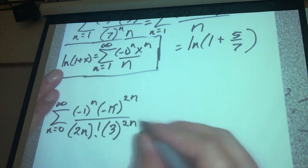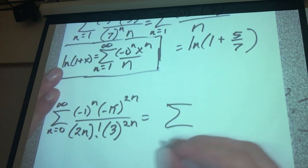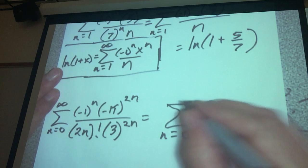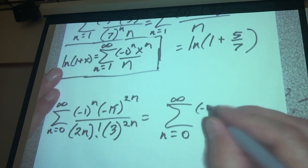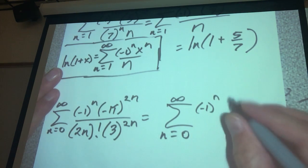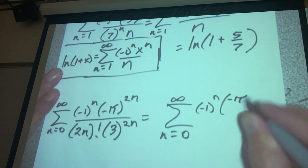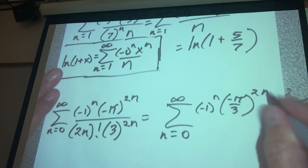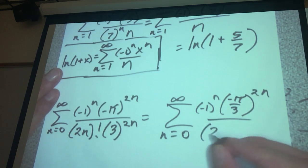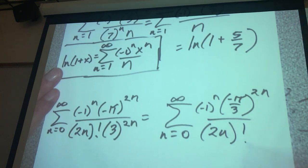Now if I was going to rewrite this one, that would be the sum n which equals 0 to infinity of negative 1 to the n, negative pi divided by 3 to the 2n and divided by 2n factorial.